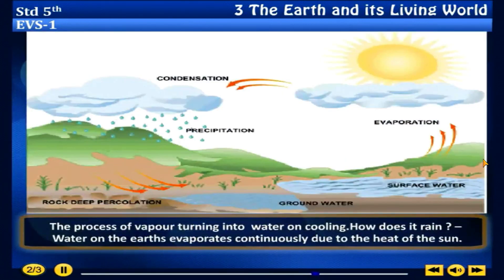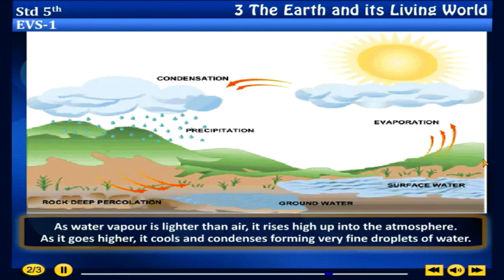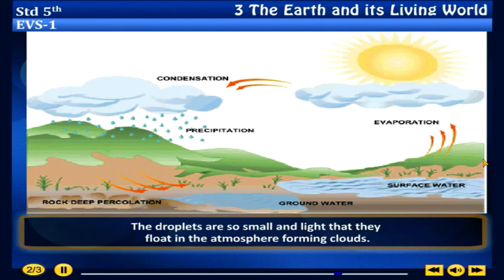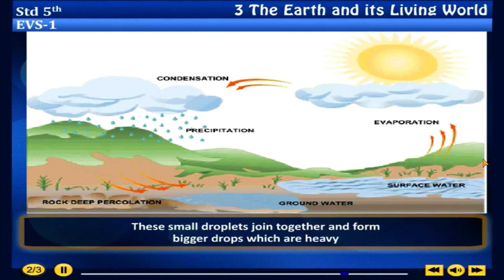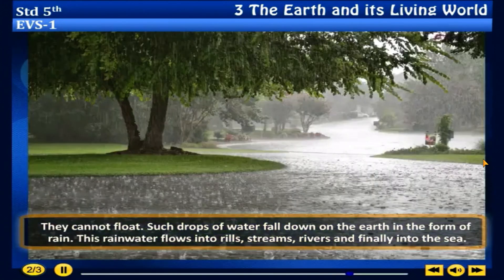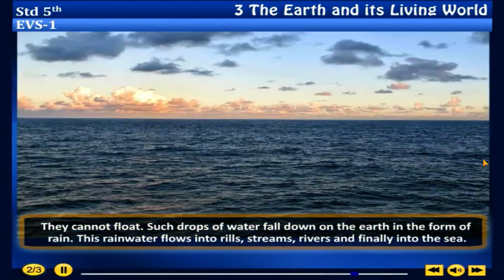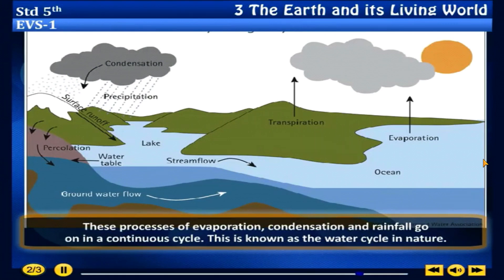Condensation is the process of vapor turning into water on cooling. Water on the earth evaporates continuously due to the heat of the sun; water that has percolated into the soil also evaporates and enters the atmosphere. As water vapor is lighter than air, it rises high up into the atmosphere. As it goes higher, it cools and condenses, forming very fine droplets of water. The droplets are so small and light that they float in the atmosphere forming clouds. These small droplets join together and form bigger, heavier drops which cannot float, and fall down on the earth in the form of rain. This rain water flows into wells, streams, rivers and finally into the sea. The processes of evaporation, condensation and rainfall go on in a continuous cycle, known as the water cycle in nature.